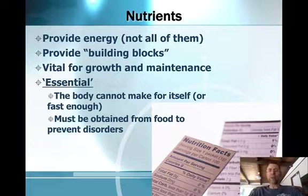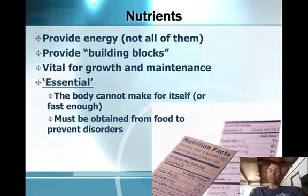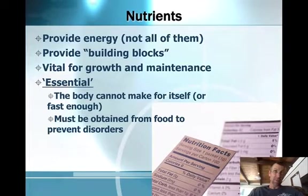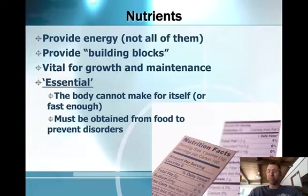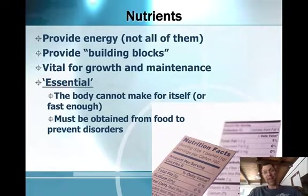Nutrients are vital for growth and maintenance and overall function. Nutrients are what is called 'essential' — and something that is essential in the context of nutrition refers to a substance that the body cannot make for itself or can't make fast enough. For example, the body can make certain amino acids, but it can't make specific ones — those are the essential amino acids. We have to consume them through the diet. The term 'essential' attached to any nutrient means we have to consume it; our body can't take care of that nutrient on its own.